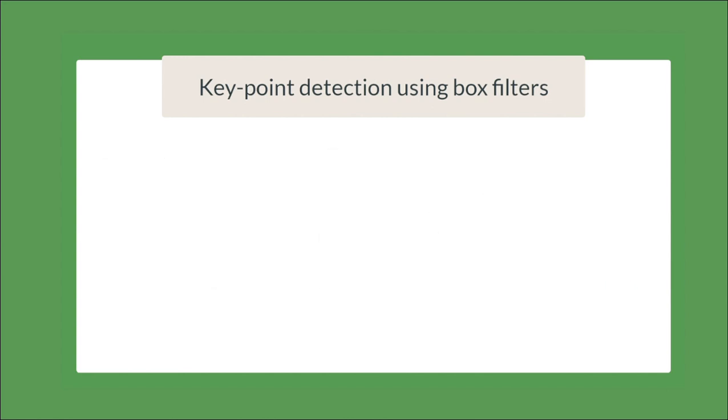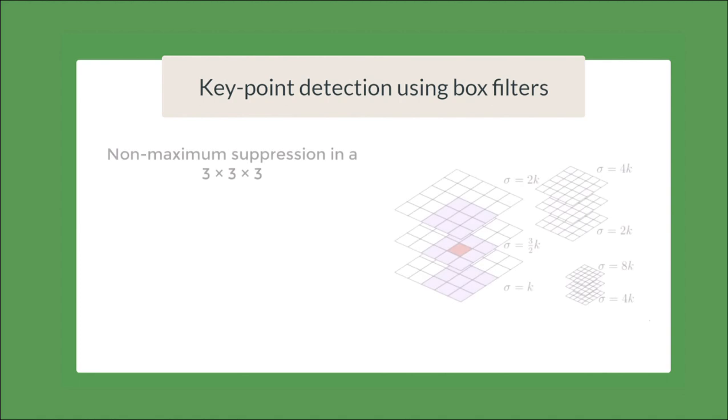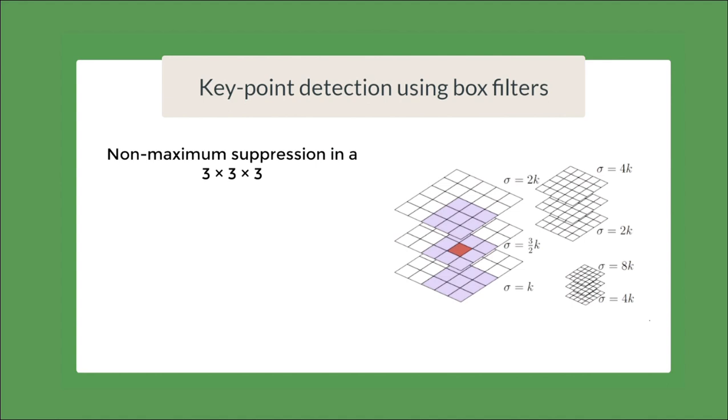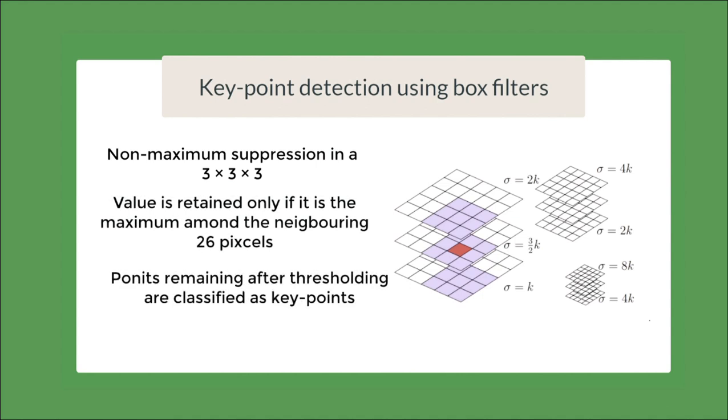Finally, after getting the responses across the scales, we perform a non-maximum suppression in 3 cross 3 cross 3 neighborhood. So, if the pixel is maximum in its own scale's neighborhood and also the scale below it and above it, we classify that point as key point or interest point at that scale.